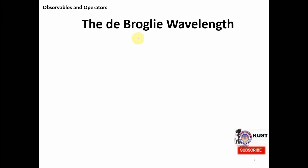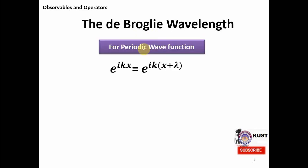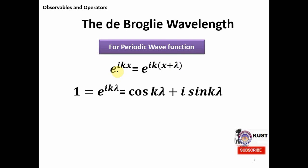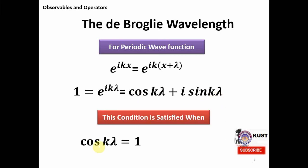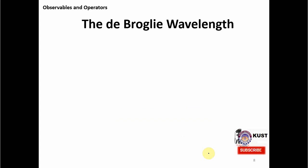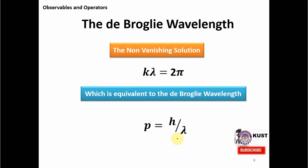Moving further, I would like to connect this eigenvalue equation with the de Broglie wavelength. Since the wave function is periodic with period λ, setting φ(x + λ) = φ(x) gives 1 = cos(kλ) + i·sin(kλ), which holds only if cos(kλ) = 1 and sin(kλ) = 0. Combining these gives the non-vanishing solution p = h/λ, which is exactly the de Broglie relation showing that momentum is inversely proportional to wavelength. This confirms the wave nature in quantum mechanical systems.